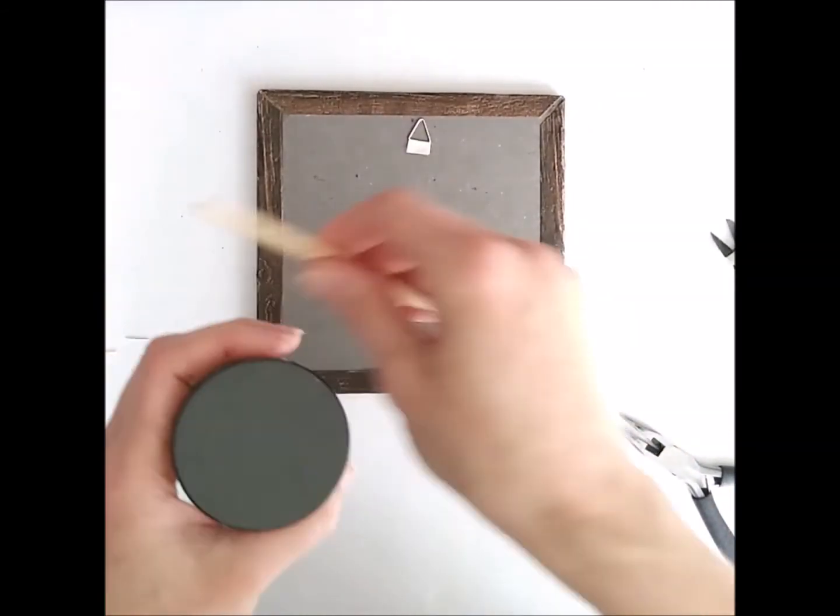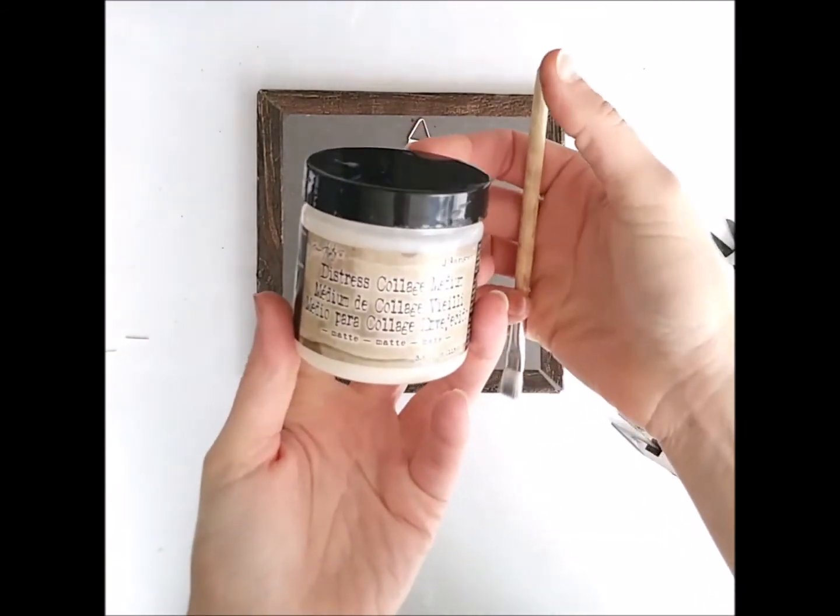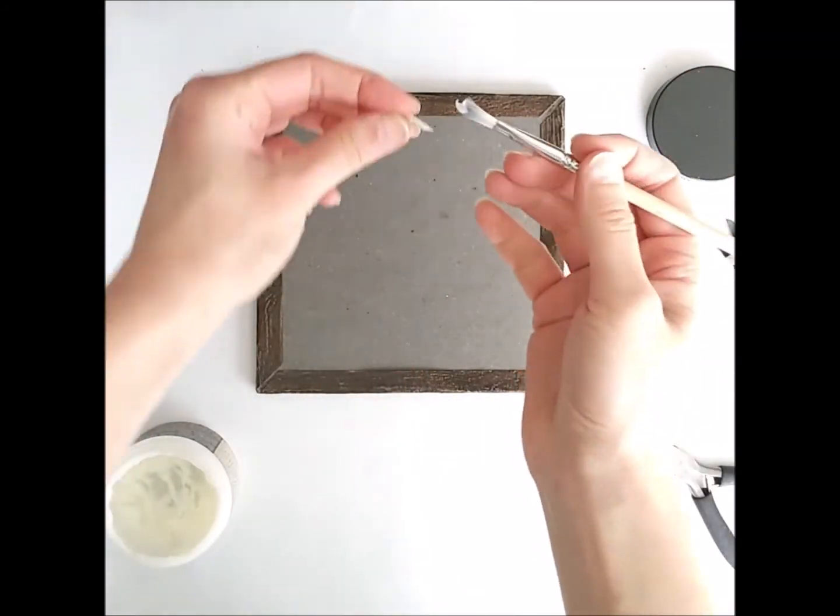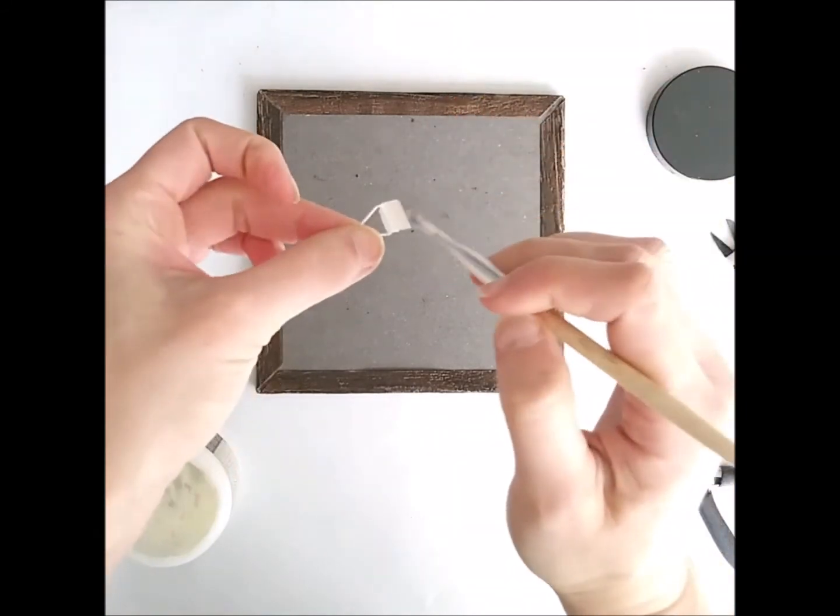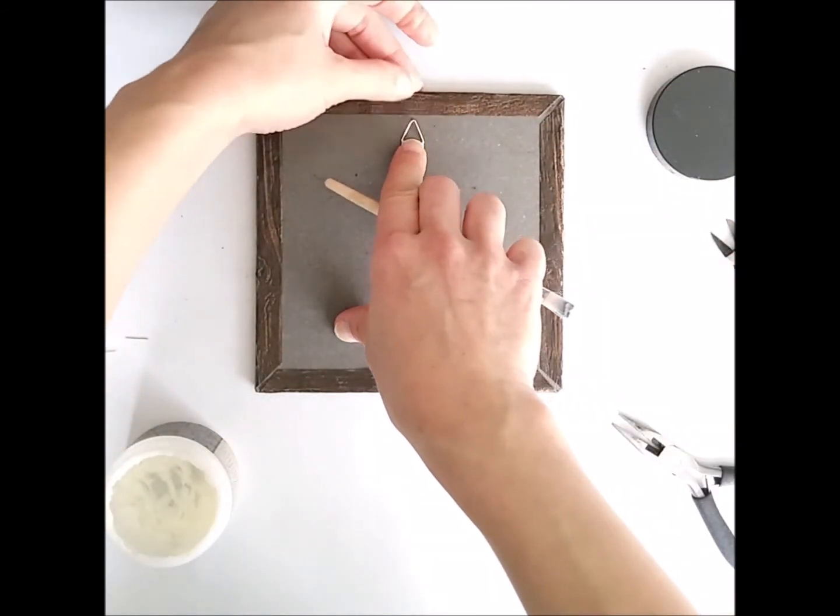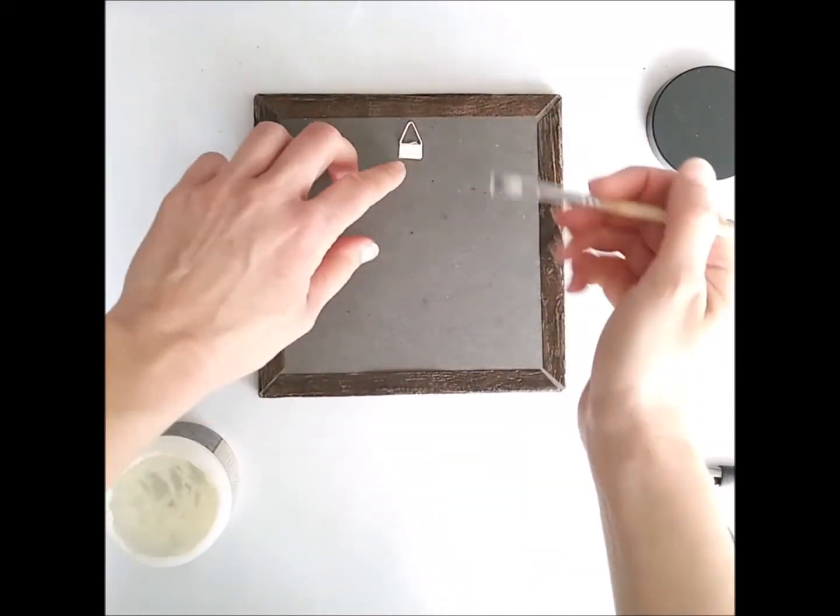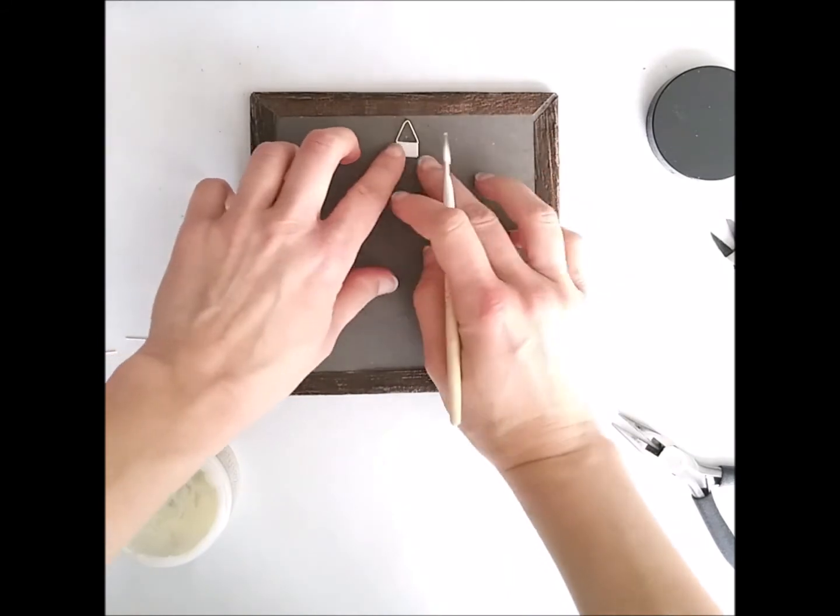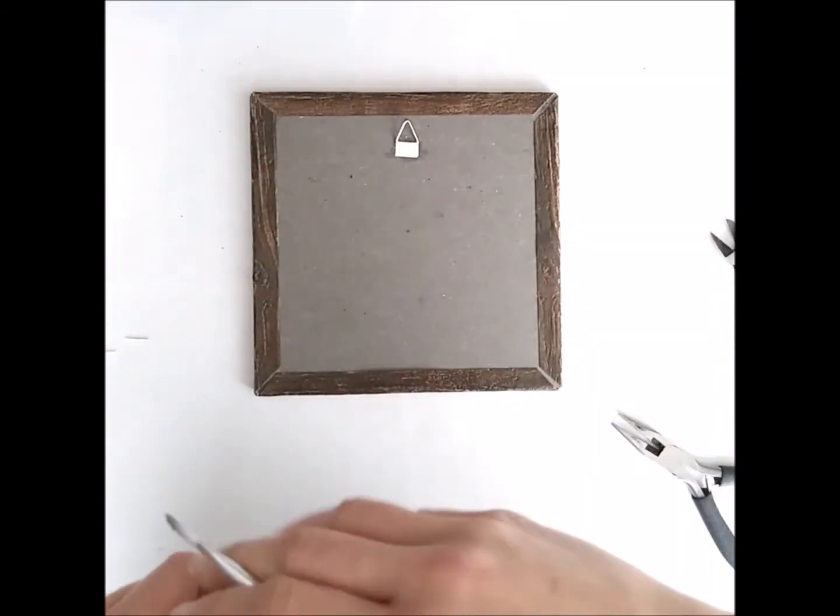And for this I will use Distress Collage Medium because it's very strong and it glues everything. So I just put a nice amount on it and make sure that the top of the triangle is aimed in the right direction and just let it set.